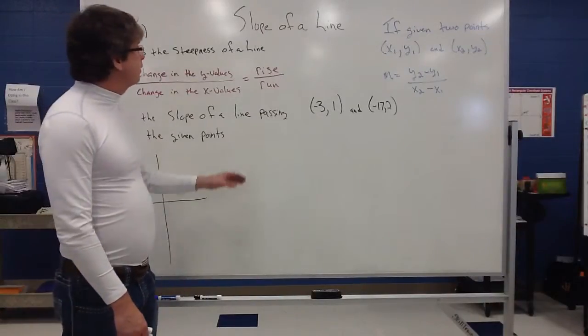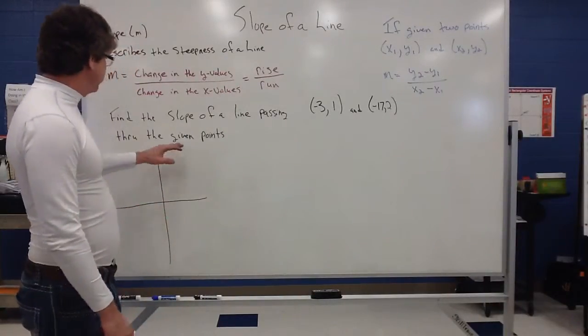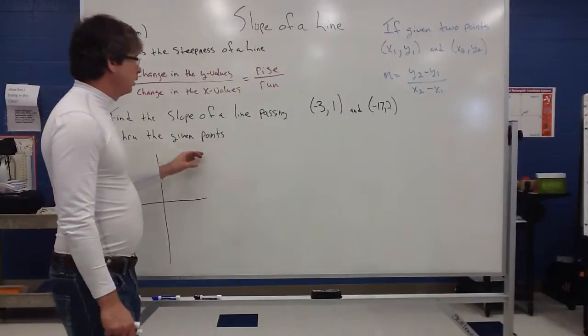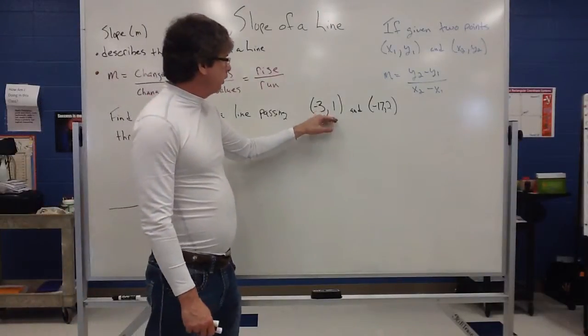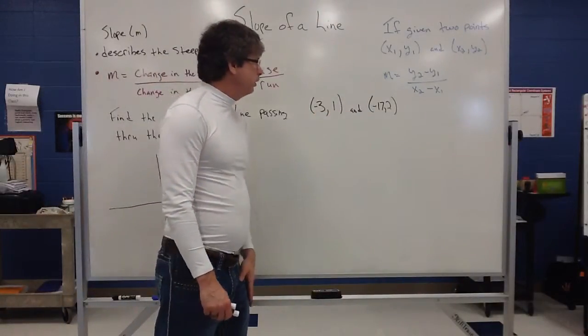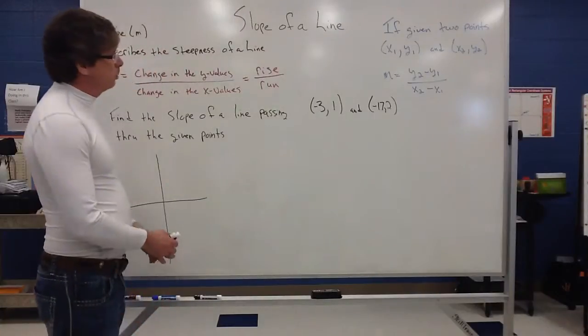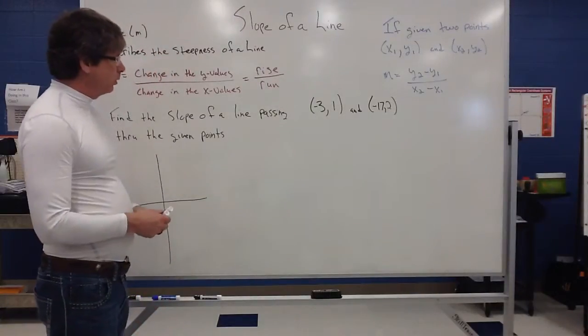I'm going to continue to do another example of finding the slope of a line given two points. So the two points we've been given are (-3, 1) and (-17, 2).